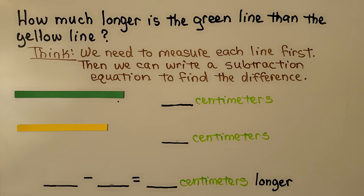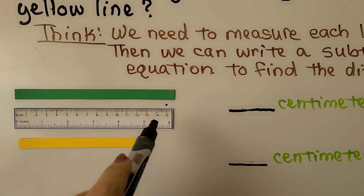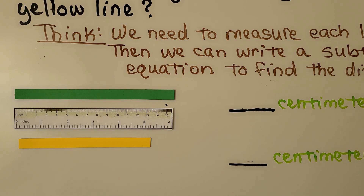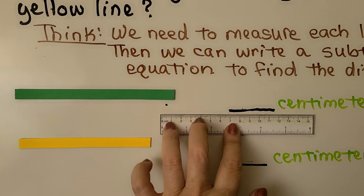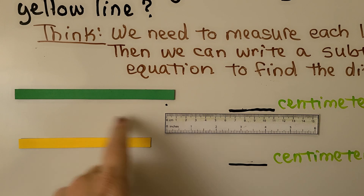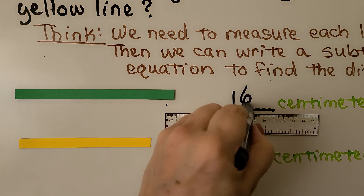Here we need to find how much longer the green line is than the yellow line. We measure each line first, then write a subtraction equation to find the difference. We line up the zero mark with the edge of the green line. Since my ruler only goes to 15 centimeters, I put a little dot there and use the ruler more than once. Sliding it over and lining up zero with the dot, that's 15 centimeters and one more — the green line is 16 centimeters.